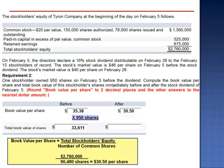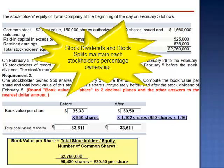After the stock dividend, this same shareholder now owns 1,102 shares — 116% of 950 shares. When we multiply the lower book value by the increased number of shares, the book value has stayed the same, because each stockholder has maintained his or her percentage ownership. This stockholder owns the same percentage of the company after the stock dividend as does every other stockholder.